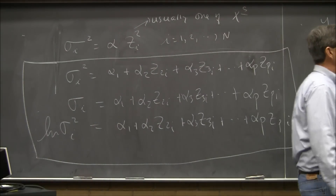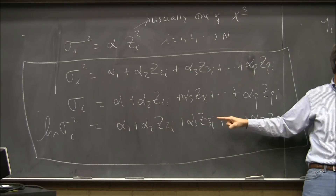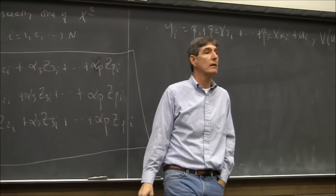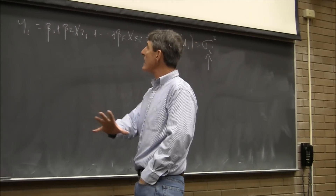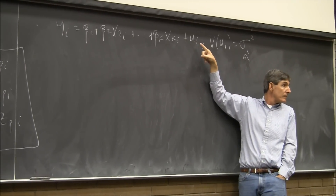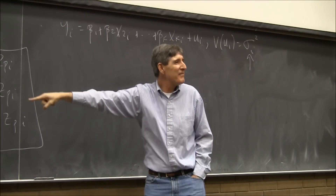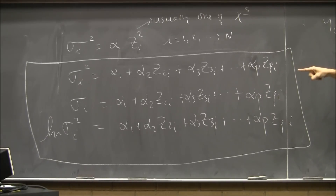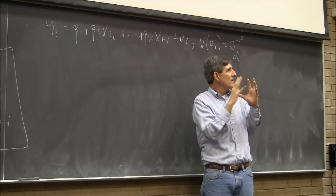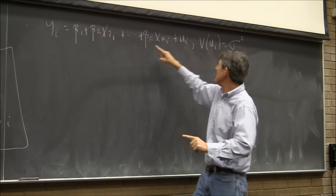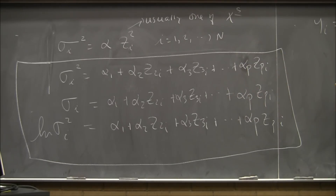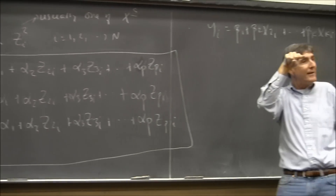Our basic procedure is simple: we use these models as the basis of a test for heteroscedasticity, and later as the basis of a correction. We estimate the main model, which gives us beta-hats and the u-hat residuals. We use u-hat to make the left-hand-side variable — either sigma-squared, sigma, or log — because u-hat-squared is essentially an estimate of sigma-i-squared. We run those auxiliary regressions, get a test statistic n-R-squared, and that's a chi-square statistic.